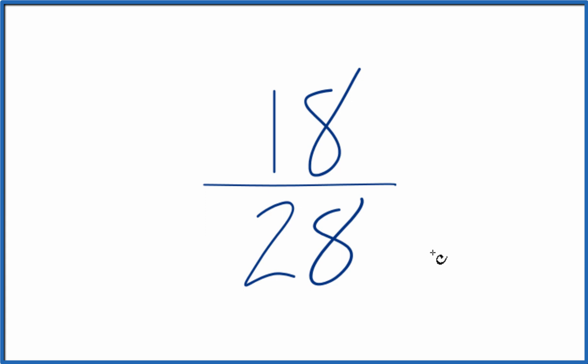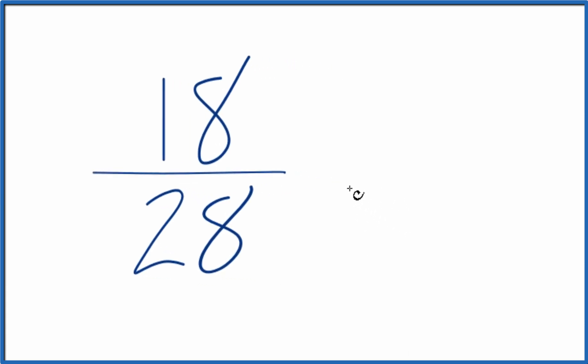To do that, we need to find a common factor, something that goes into 18 and 28 evenly. 18 and 28 are even numbers, so why don't we just cut them in half, divide each by 2? Because 18 divided by 2, that's 9, 28 divided by 2 is 14.